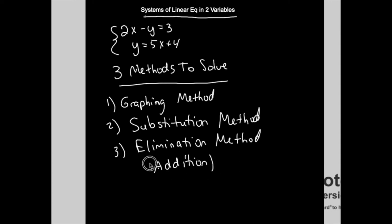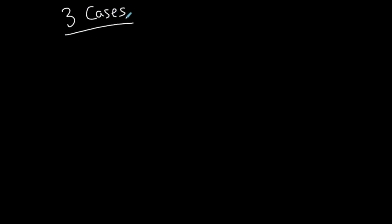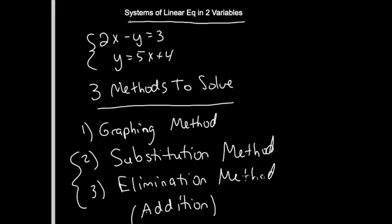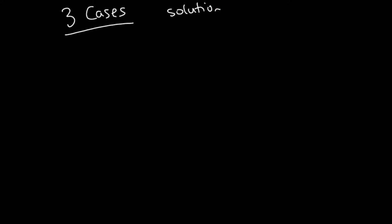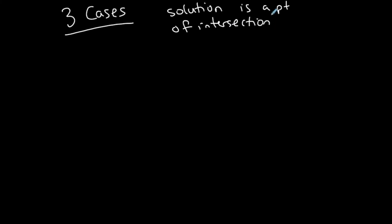The elimination method is sometimes also called the addition method. These names describe exactly what you do: in the substitution method you substitute, and in the elimination method you're eliminating something by adding — that's why it's also called the addition method. I use the second two methods the most and never use the graphing method. When you're solving a system of linear equations, the solution is a point that satisfies both equations — it's a point of intersection.